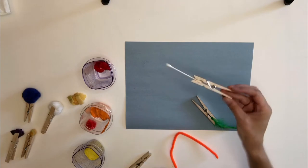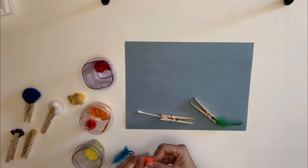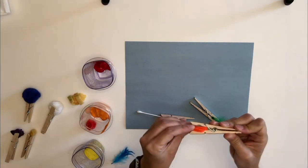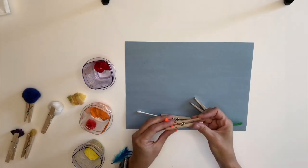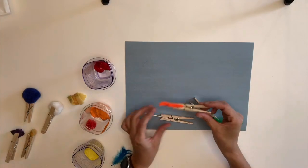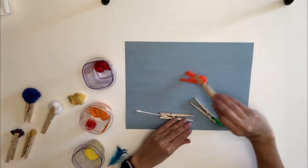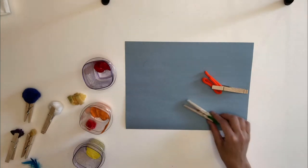And then we have my Q-tip. Look, that one makes a really long paintbrush now, huh? And finally, I'm gonna put my pipe cleaner in one. So all of those different things are going to make different textures on our paper as we paint. And you can move them around into your clothespins too, to make even different, more different textures. Are you ready to get started painting?